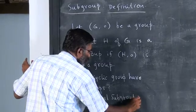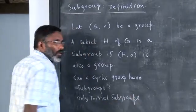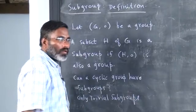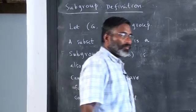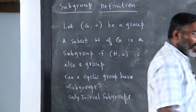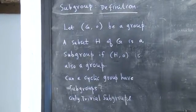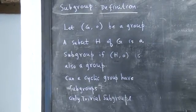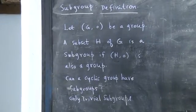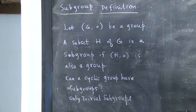The group we discussed — {1, -1, i, -i} — is a cyclic group with a generator. A student notes it has a subgroup {1, -1}.